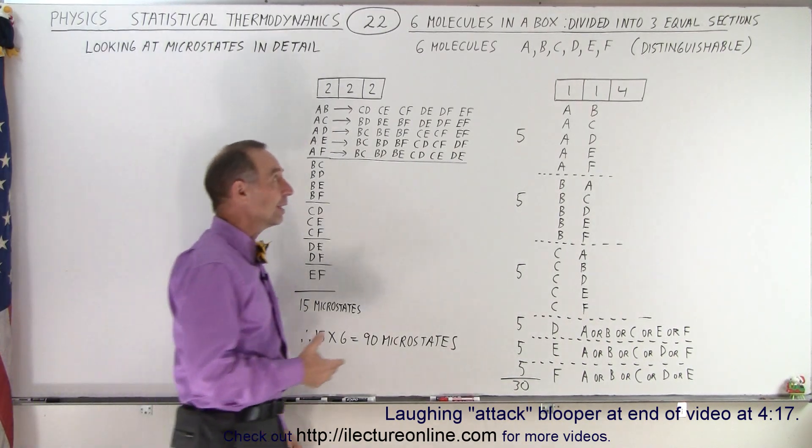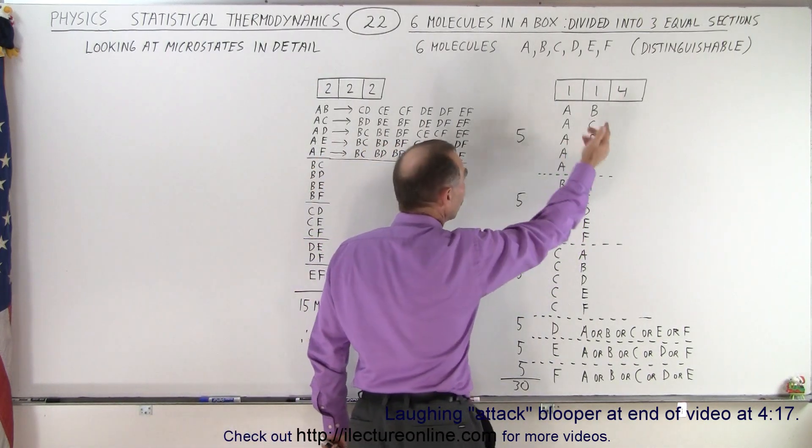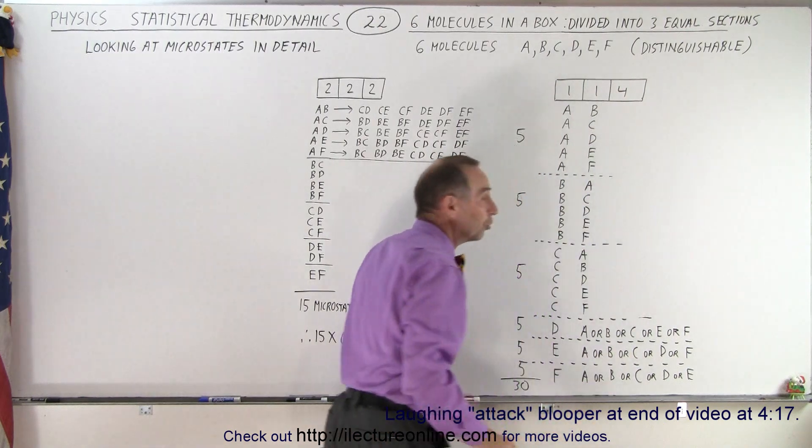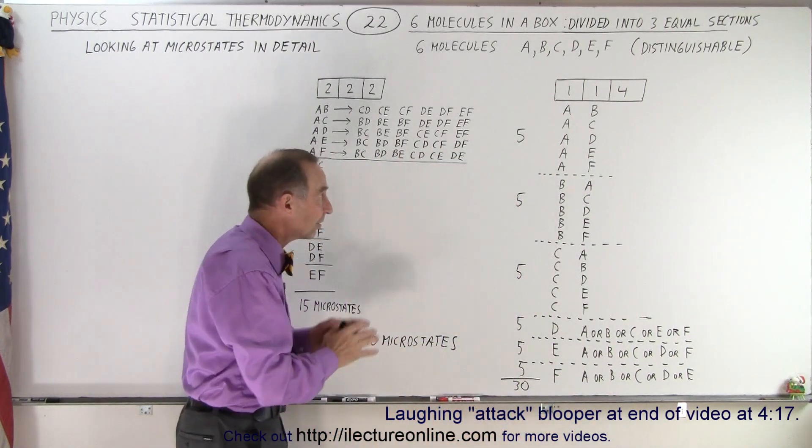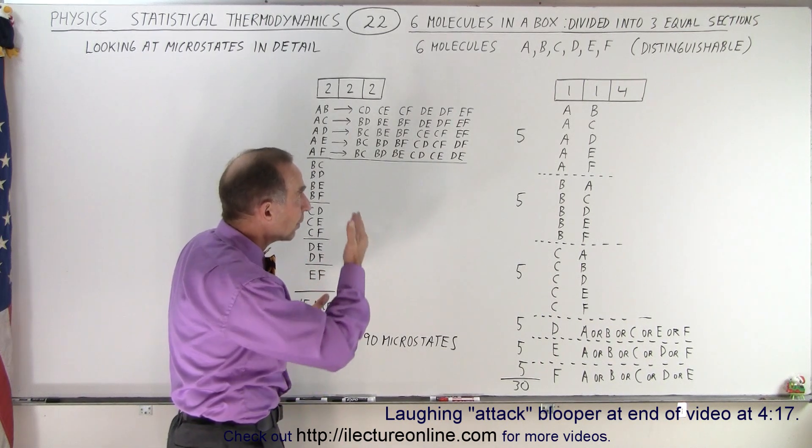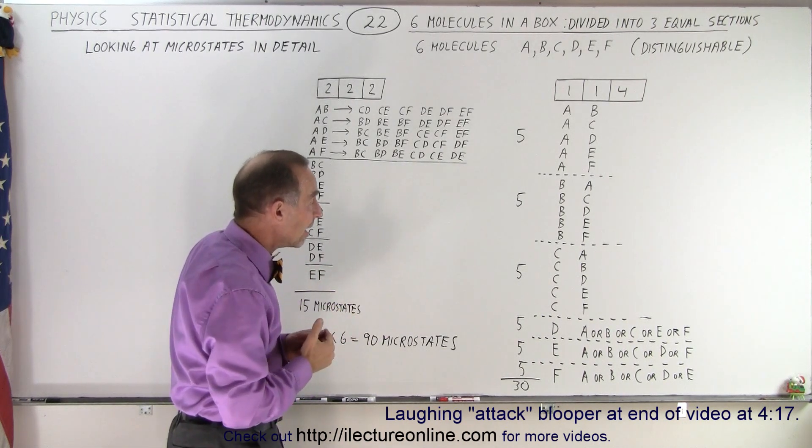Well here you can take a look. Let's say we take the situation where we have one in the left, one in the middle, and four of the molecules to the right side of that box in equal partitions. And again these are distinguishable molecules so we identify them as A, B, C, D, E, and F.